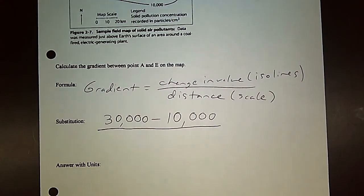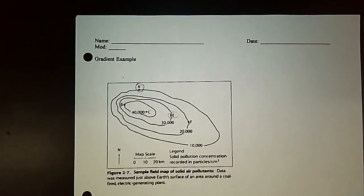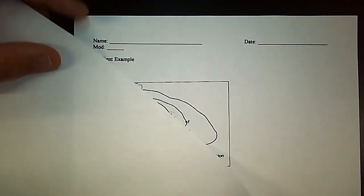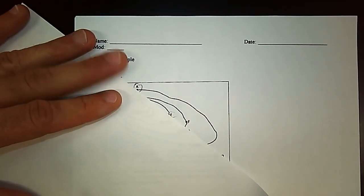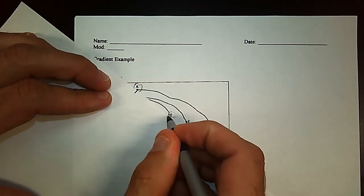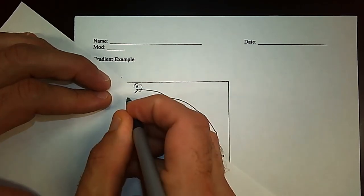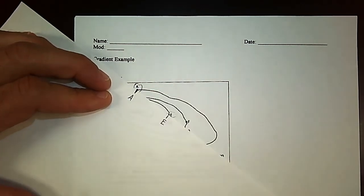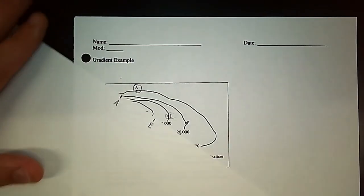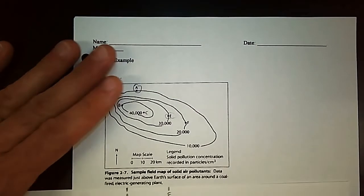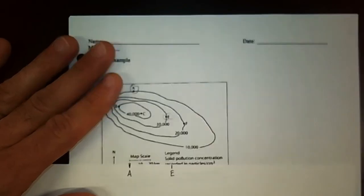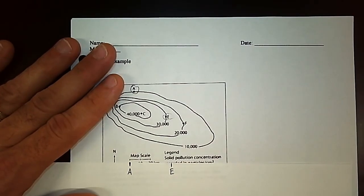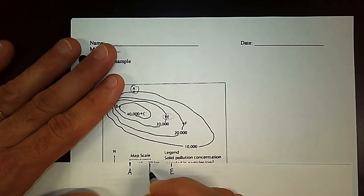And now distance, how do you figure it out on this map? So what I do is I take a piece of paper, I line it up to my points A and E, just like so. Make marks on the piece of paper like this. And then I'm going to bring it down to my scale down here. What you're going to do is basically mark the distances and slide over.